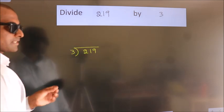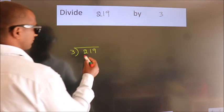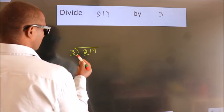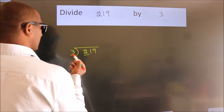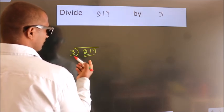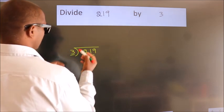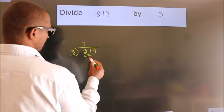This is your step 1. Next, here we have 2, here 3. 2 is smaller than 3, so we should take 2 numbers: 21. When do we get 21? In the 3 table, 3 sevens is 21.